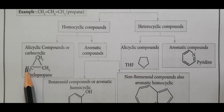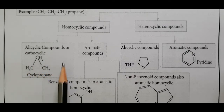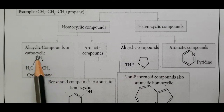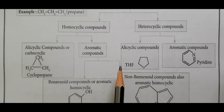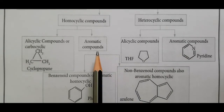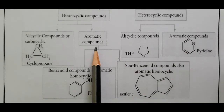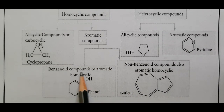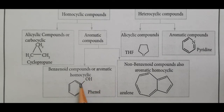Alicyclic compounds include cyclopropane, cyclobutane, and cyclopentane — also called carbocyclic compounds. Aromatic compounds are further classified into benzenoid compounds. Benzenoid compounds are aromatic homocyclic compounds.